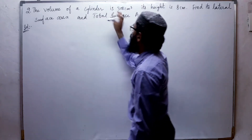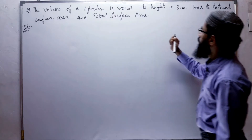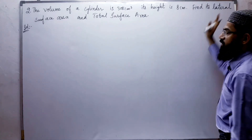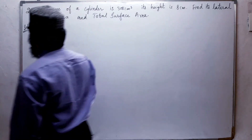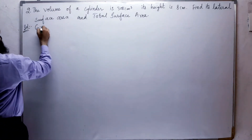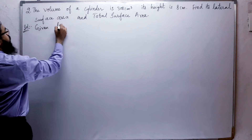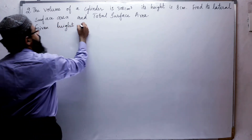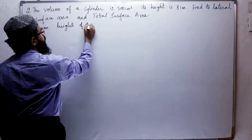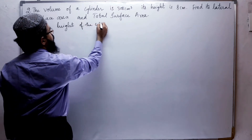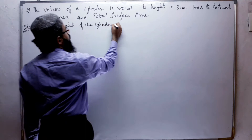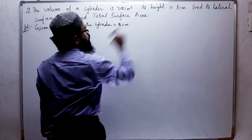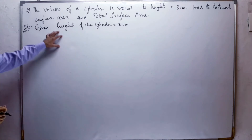They have given the volume of the cylinder as 308 cubic centimeters and height is 8 centimeters. We have to find the lateral surface area and total surface area. Let us write what is given: height of the cylinder is equal to 8 centimeters.